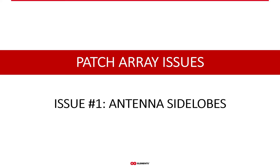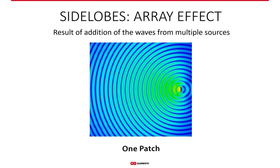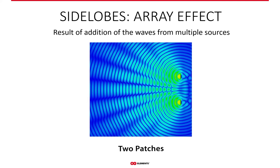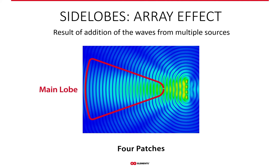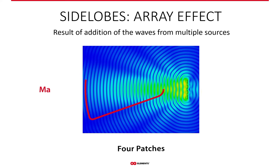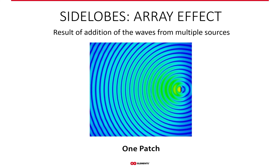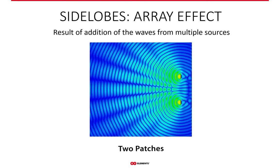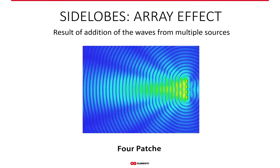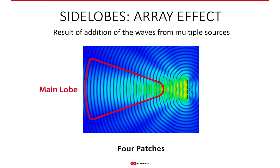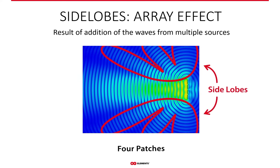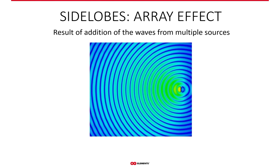Aligning with our first webinar on horns, we now look at patch arrays in terms of side lobe performance. There are two major causes of side lobes in patch arrays. The first is the physics of antenna arrays — specifically, the interference of waves radiated from each individual patch. Where waves add constructively there's a maximum, creating a side lobe; where they add destructively there's a minimum, creating a dip in the radiation pattern.